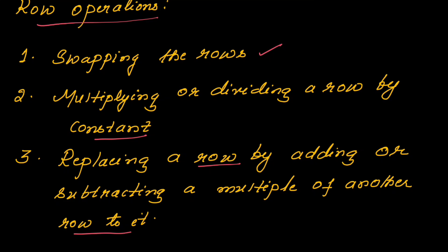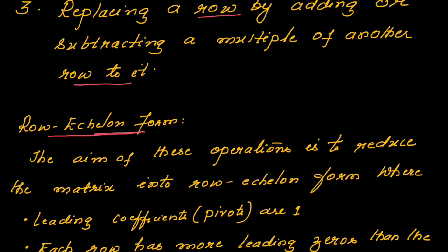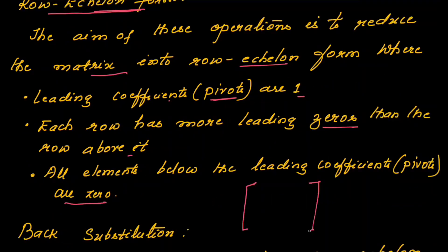Let us see which row operation is suitable for our example. The next term is row echelon form. The aim is to reduce the matrix into row echelon form where the leading coefficients — the pivots — are 1, each row has more leading zeros than the row above it, and all elements below the leading coefficients are zero. In a 3×3 matrix, the elements placed along the diagonal are the diagonal elements, and the three elements below the diagonal must be made zero.